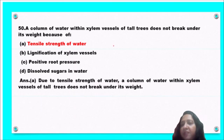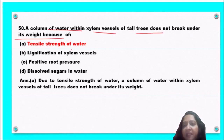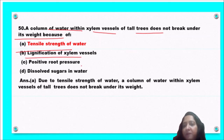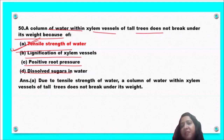Next question: a column of water within the xylem vessel of tall trees does not break under its own weight because of — tensile strength of water, lignification, positive root pressure, or dissolved sugars in water? The correct answer is option A — tensile strength of water prevents the water column from breaking.